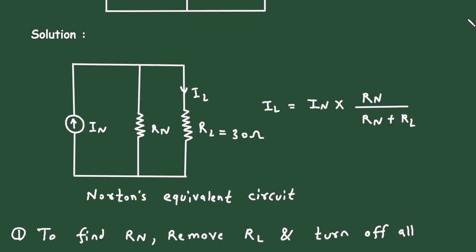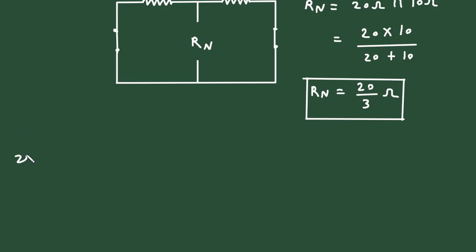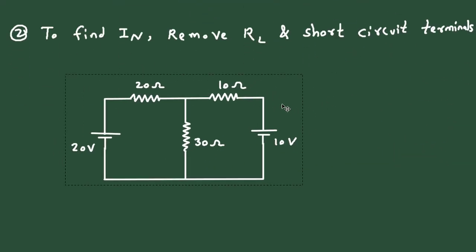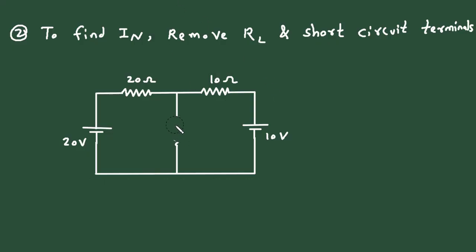Next we have to find the value of Norton's current. Step number 2: to find In, remove Rl and short-circuit the terminals. Now when we remove this load resistor Rl and short-circuit these terminals, the current flowing through will be Norton's current In.